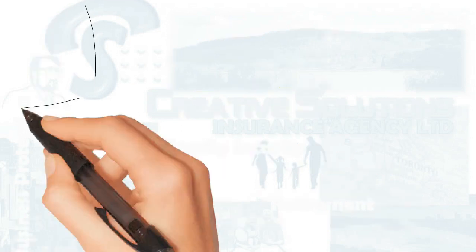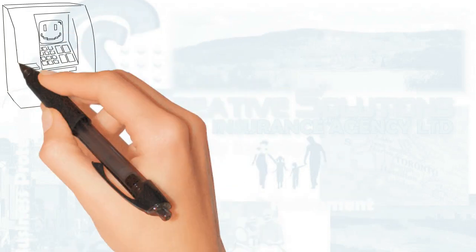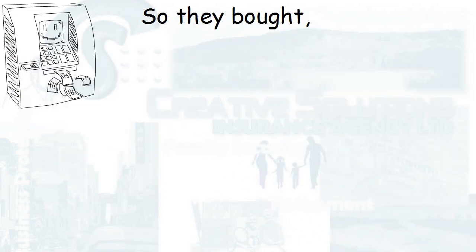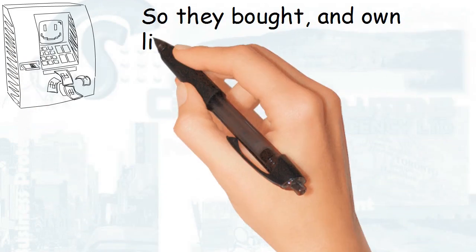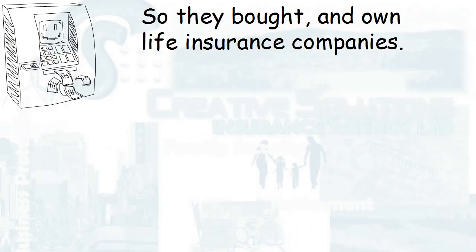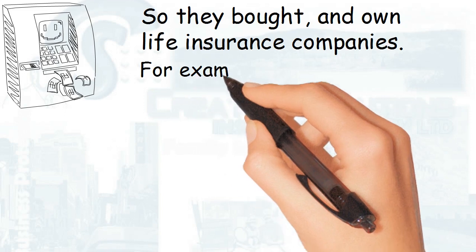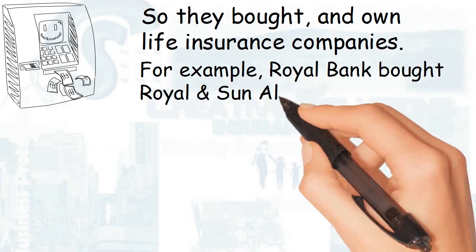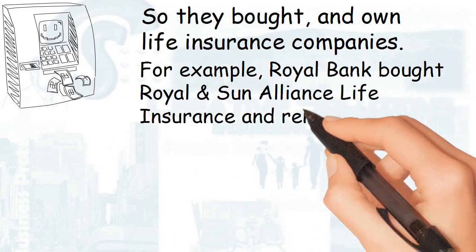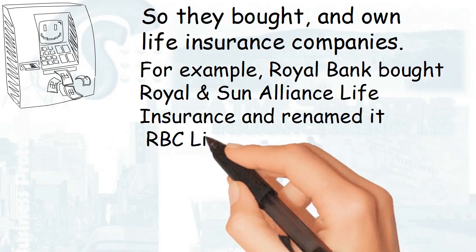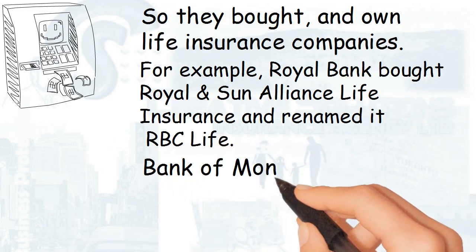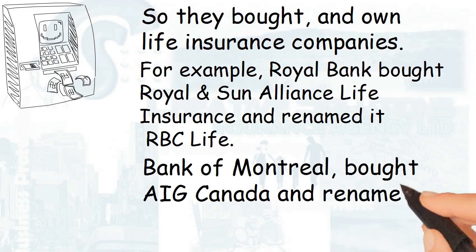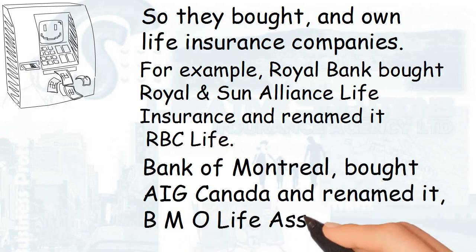Banks, by law, cannot issue life insurance, so they bought and own life insurance companies. For example, Royal Bank bought Royal and Sun Alliance Life Insurance and renamed it RBC Life. Bank of Montreal bought AIG Canada and renamed it BMO Life Assurance.